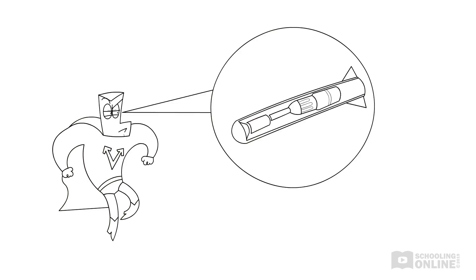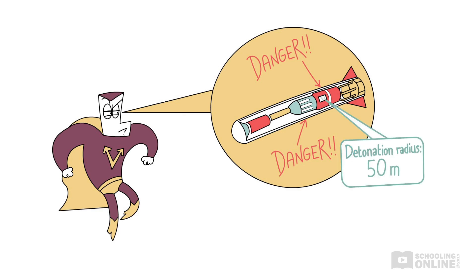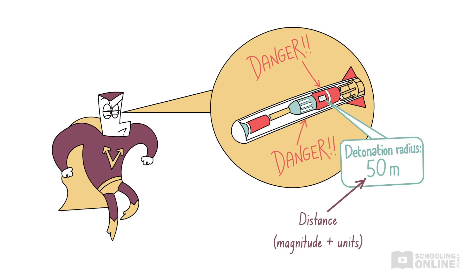Using his X-ray vision, Vector Man scrutinises the internal structure of the missile. He realises that it'll detonate if it comes within 50 metres of the reactor's core. Once again, this quantity is a distance — it doesn't matter which direction the missile approaches from. All that matters is its proximity to the nuclear reactor.